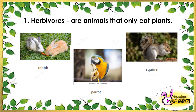Other examples of herbivores: we have the rabbit — as you can see on the picture, the two rabbits are eating a carrot. Next, parrot — this parrot loves eating banana. And lastly, squirrel — it is eating a walnut. These animals are herbivores because they only eat plants.